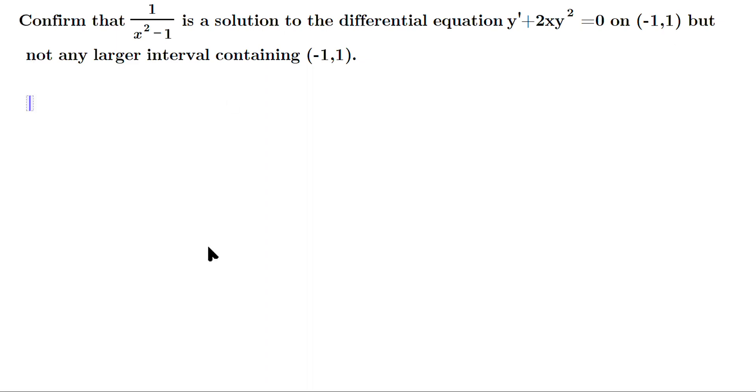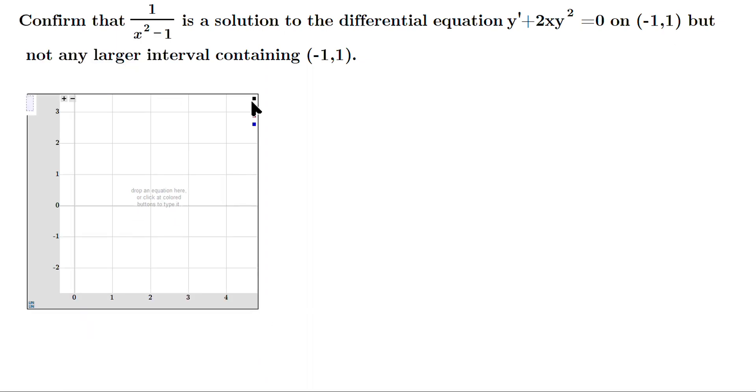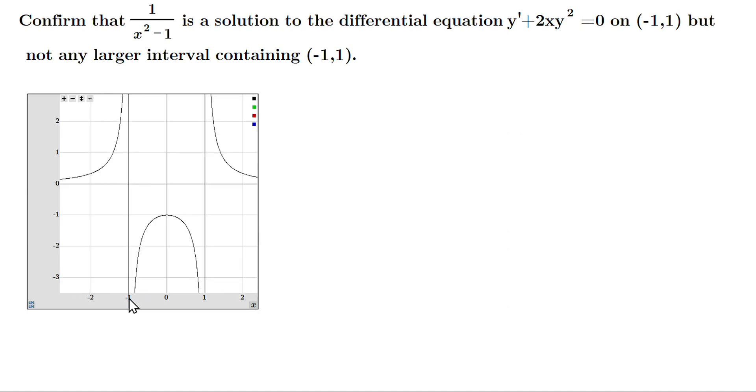When you graph 1/(x²-1), it looks like this. You see at negative one right there there's a vertical asymptote and at positive one right there there's a vertical asymptote.